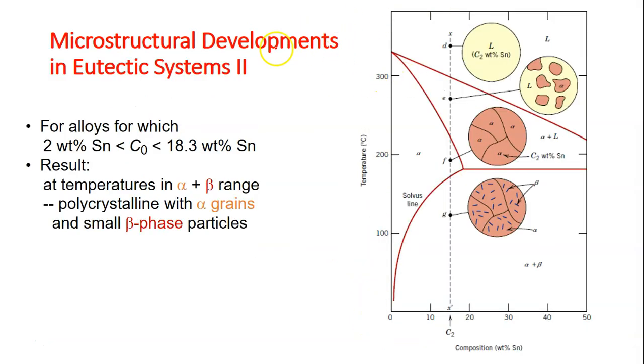Let's look at the second case of the microstructure developments in eutectic system. So in the second case, we are going to look into this region from 2% of tin until 18.3% of tin, meaning from here, from this region here, 2% until this region which is 18.3%.